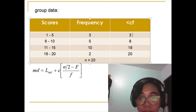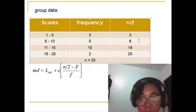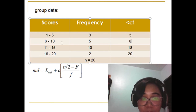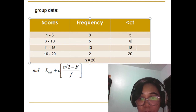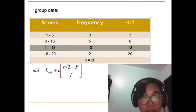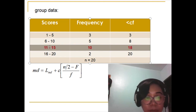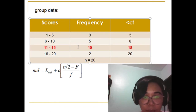There are 3 observations with scores 5 and below, and there are 8 observations with scores 10 and below. Since there are 8 students with scores 10 and below, the 10th student will be found in the next class interval. This class interval is now our median class.